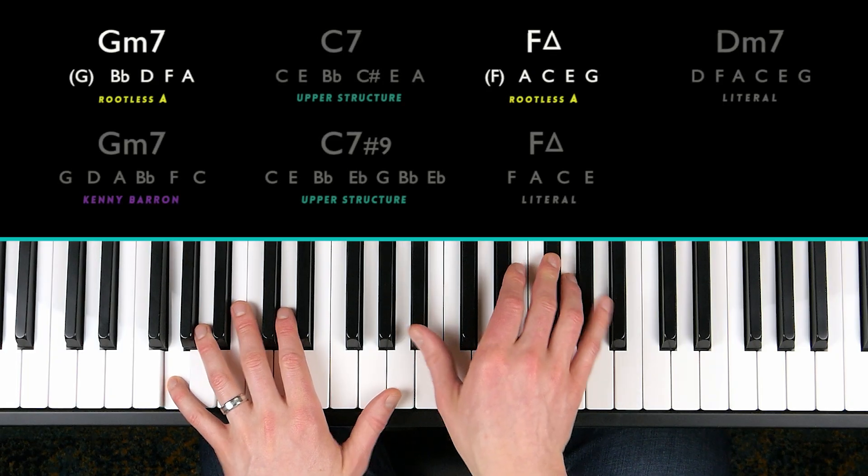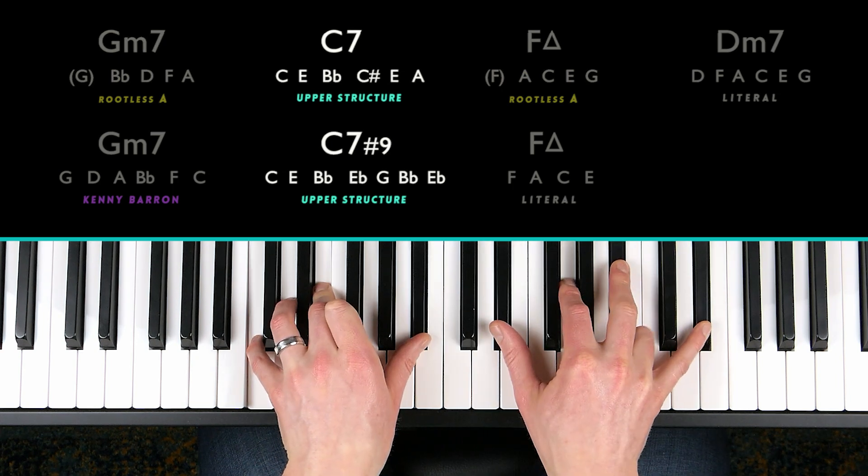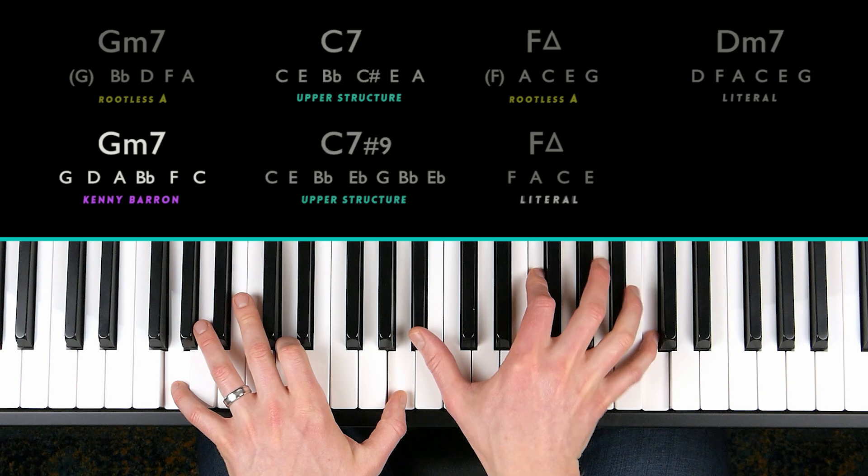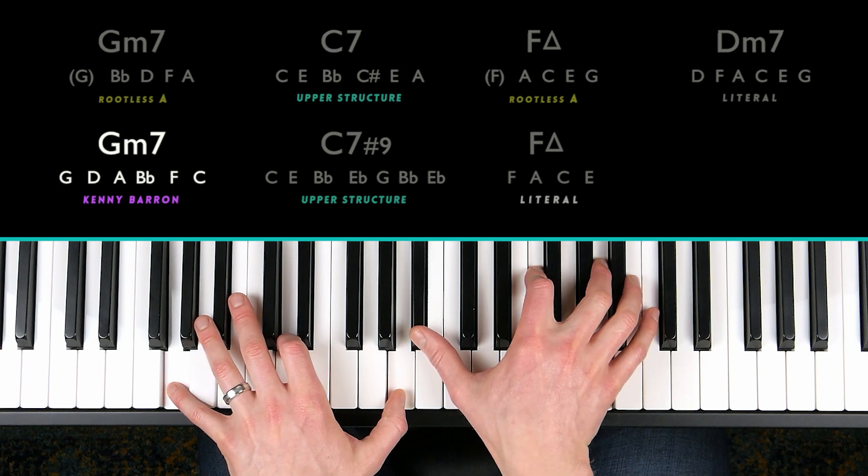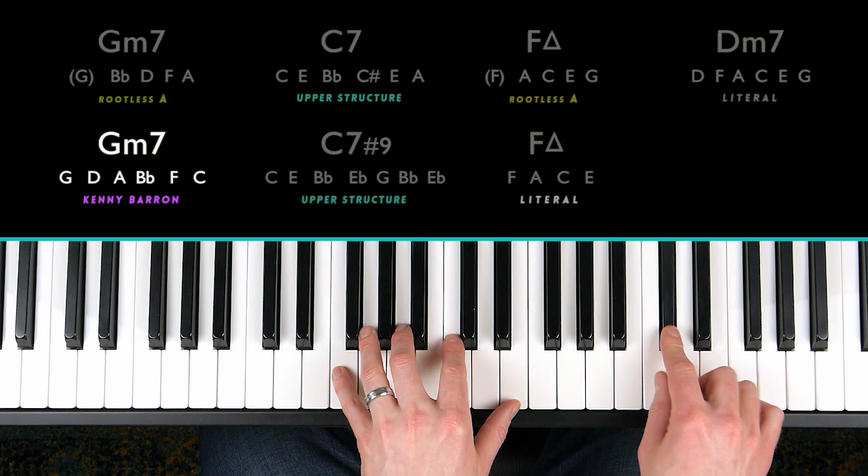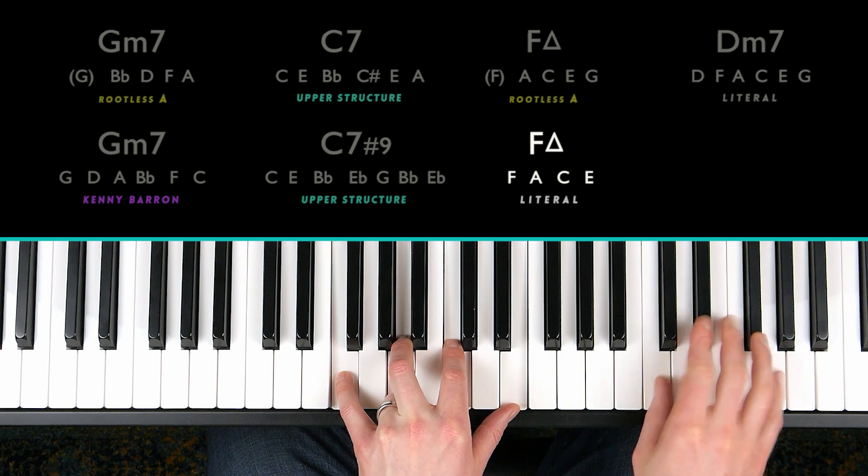So we've got a really nice variety of voicings here. We've got rootless chord voicings, we've got upper structures like this, we've got the Kenny Barron 11th voicing, and we have a simple literal chord voicing to end. And to end, let's just listen to our arrangement one more time.